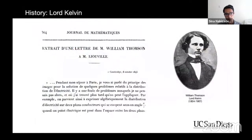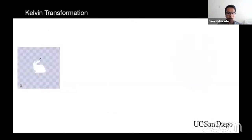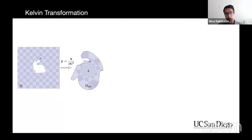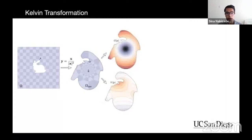Our work is motivated by the classical Kelvin transformation introduced by Lord Kelvin in 1845. To solve PDEs in an infinite domain, we first invert the domain, which introduces singularities as the infinite space is squeezed to a bounded region. To eliminate these, we decompose the function post-inversion into two parts: one analytical part capturing the singularities, and one smooth function that we solve for — all within a compact domain using standard solvers.